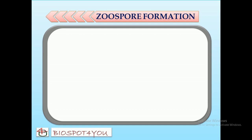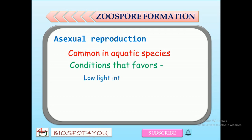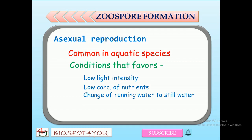Zoospores are motile spores produced in Vaucheria during asexual reproduction. Commonly, aquatic species of Vaucheria reproduce asexually by this method. Zoospore formation in aquatic members is favored by conditions like low light intensity, low concentration of nutrients in the medium, conversion of running water to still water, etc. In Vaucheria, the zoospores are formed in specialized structures called zoosporangia.